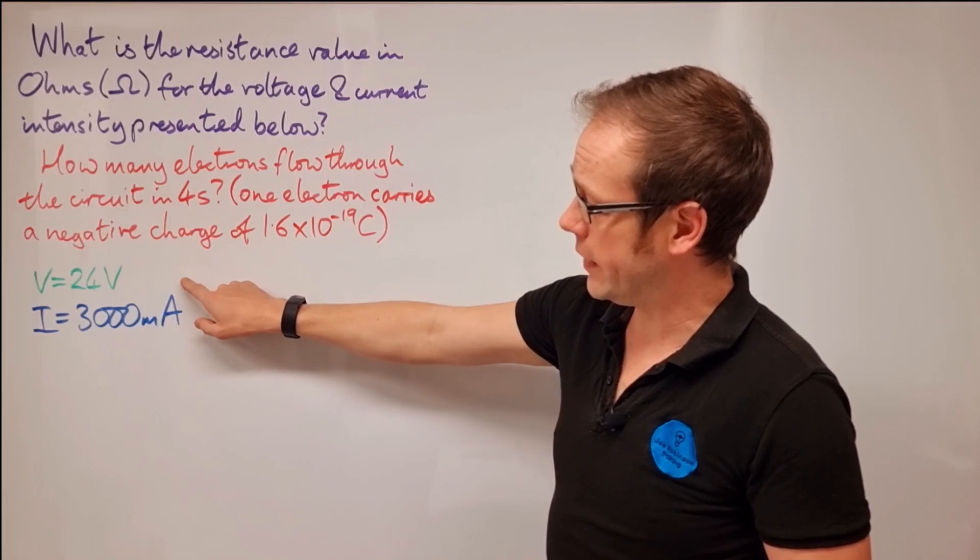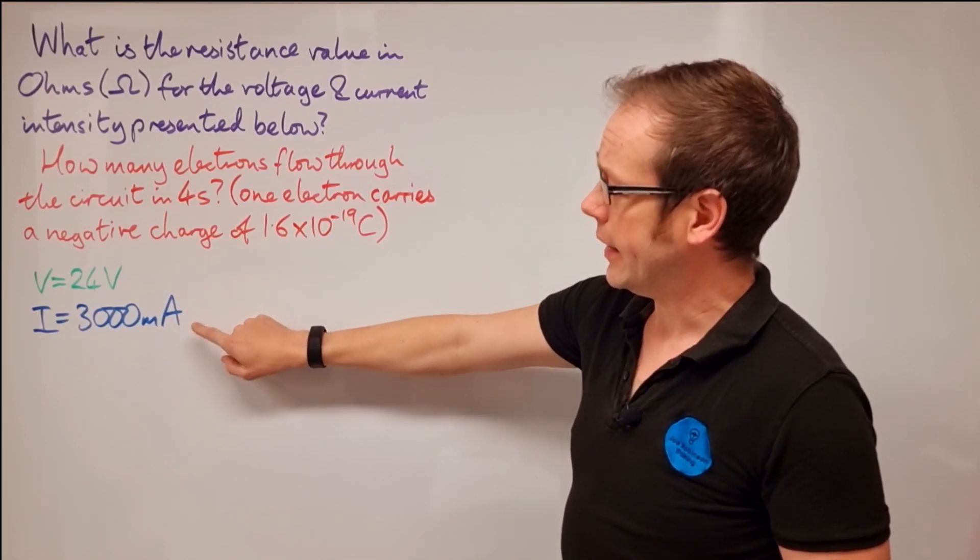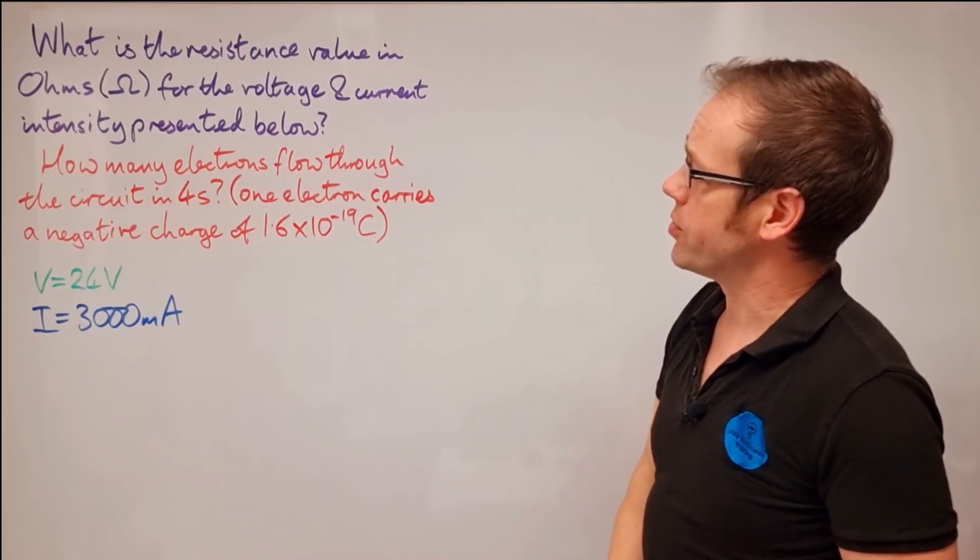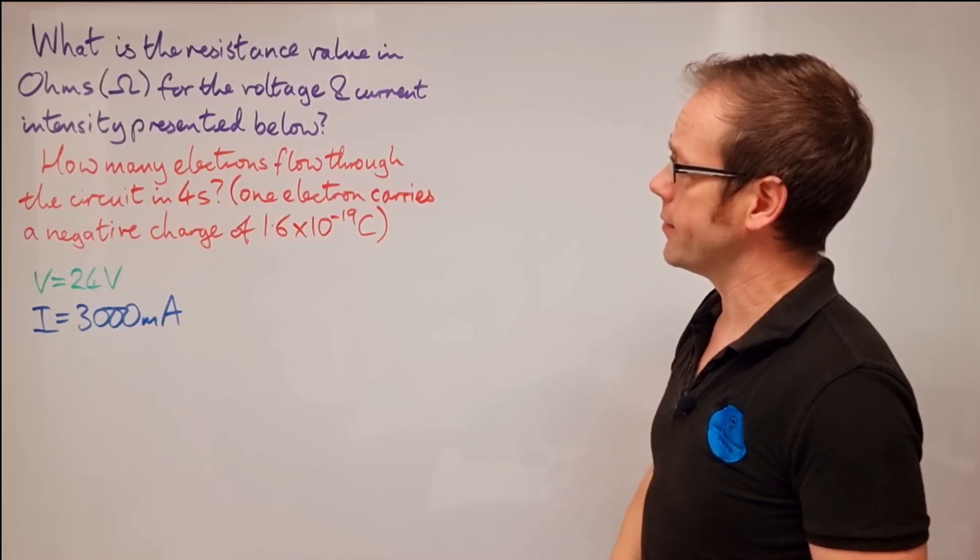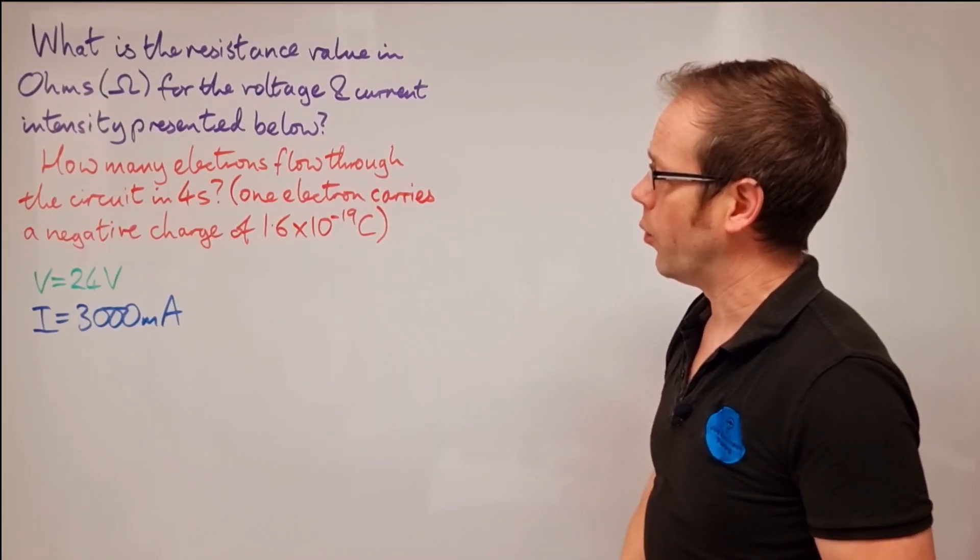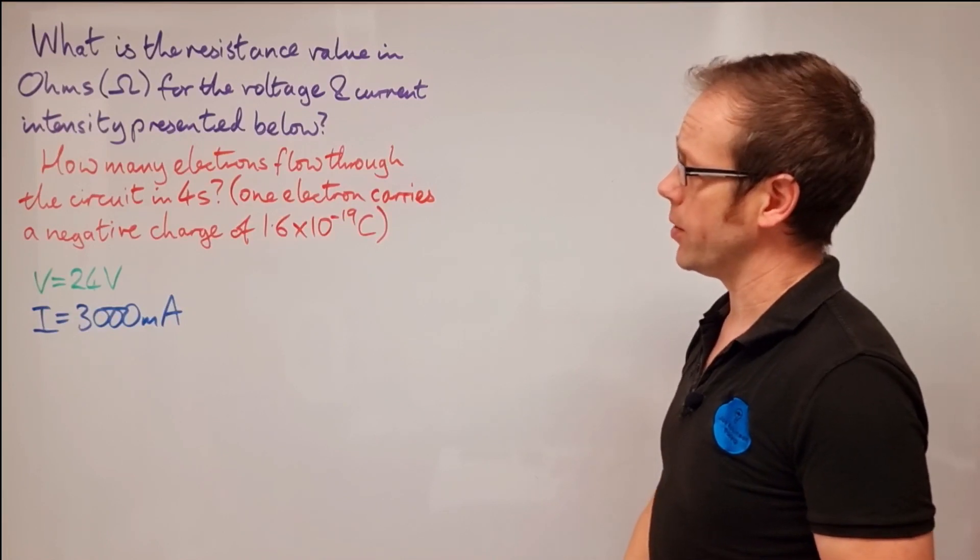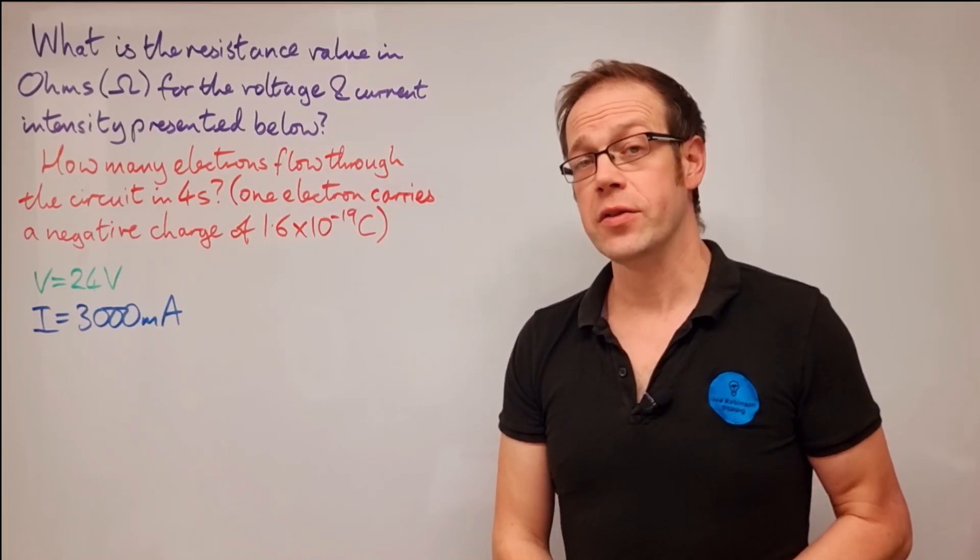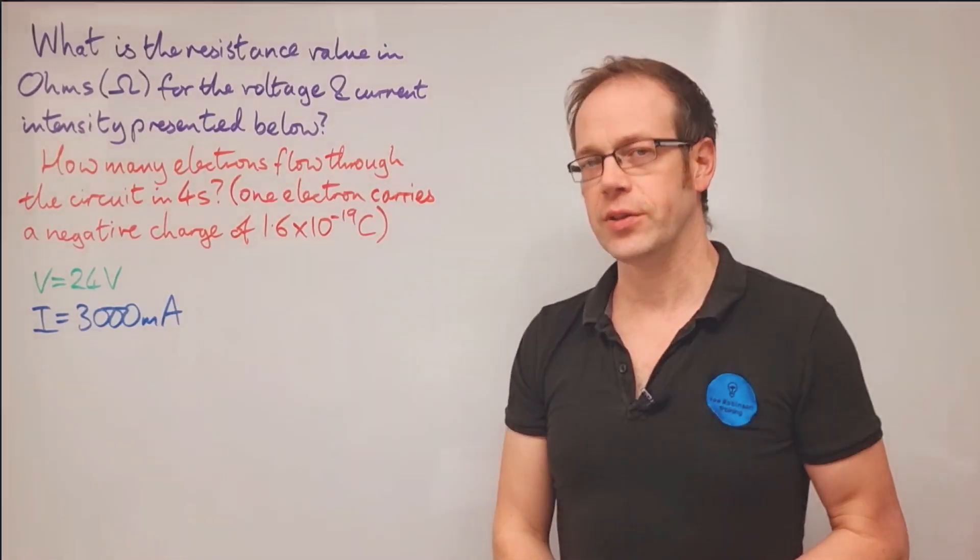What is the resistance value in ohms for the voltage and current intensity presented below? And then you're given a couple of values. V is 24 volts and I is 3000 milliamps. And then the second part of the question is how many electrons flow through the circuit in four seconds? And we've got that helpful reminder. One electron carries a negative charge of 1.6 times 10 to the minus 19 coulombs. So let's try and start to unravel this question.